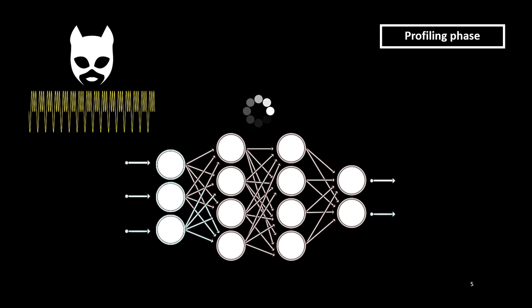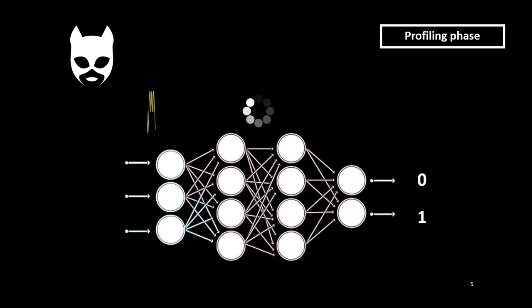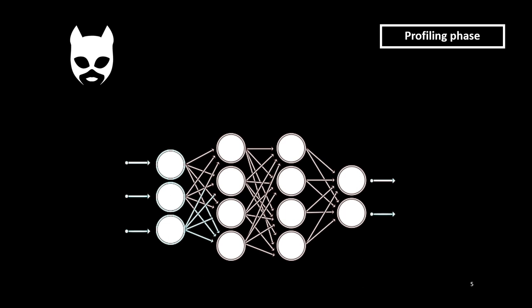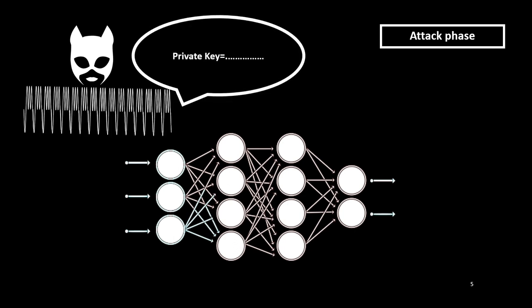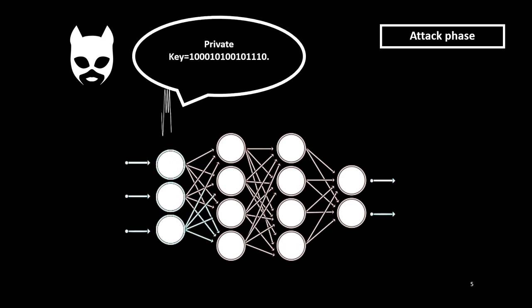During the profiling phase, the adversary decomposes the physical trace into sub-traces such that each element represents the process related to each bit. The adversary trains a neural network to predict the correct sensitive information based on these sub-physical traces. Once this phase is performed, the adversary can predict the intermediate variable on a target device containing a secret she wishes to retrieve. By using a new physical trace in the attack phase, she assigns a value to each bit from the probabilities returned by the neural network, and by estimating the value of each bit, she can guess the private key manipulated by the cryptographic module.